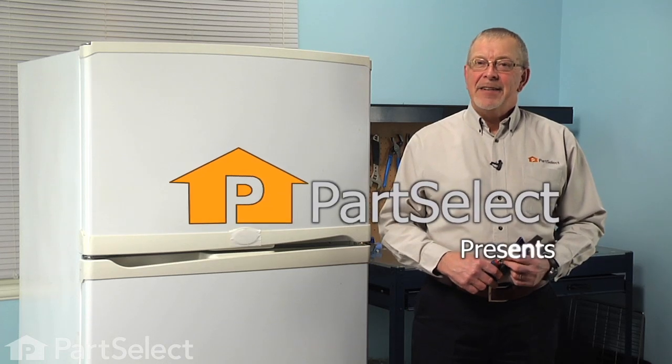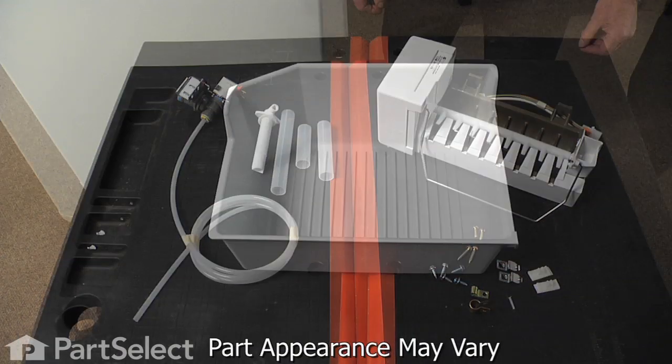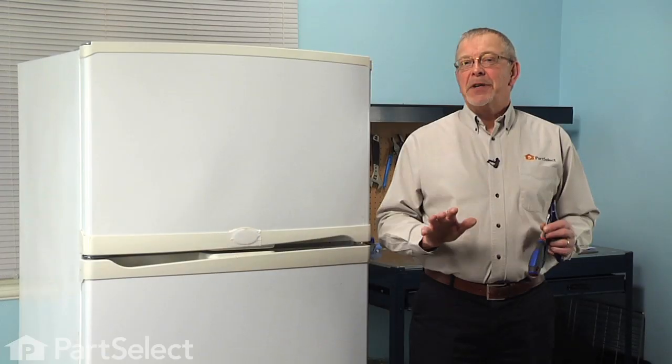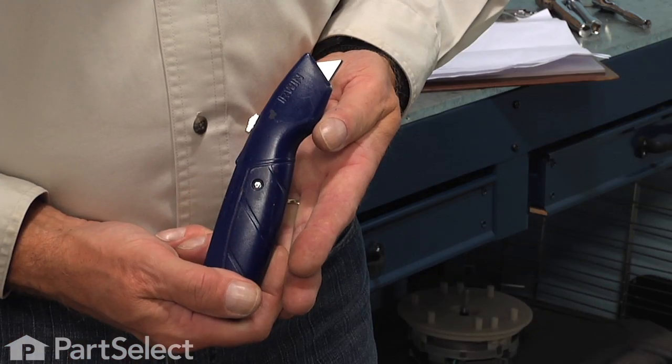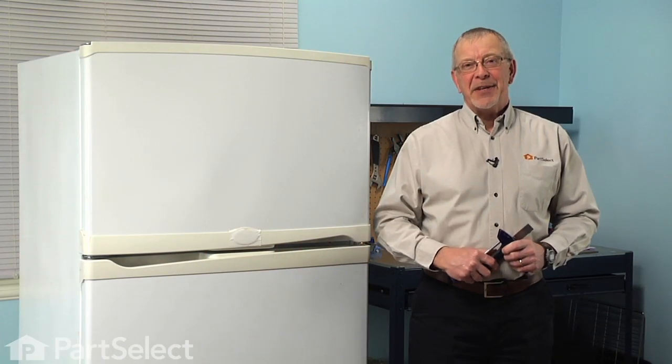Hi, it's Steve from PartSelect. Today we're going to show you how to install an ice maker in your refrigerator and it's a really easy job. All we're going to need is a quarter inch nut driver, a putty knife and a utility knife. Let me show you how we do it.